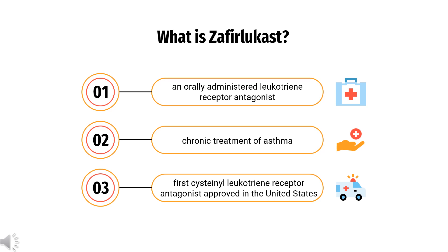Zafirlukast is an orally administered leukotriene receptor antagonist used for the chronic treatment of asthma. While Zafirlukast is generally well-tolerated, headache and stomach upset often occur. Some rare side effects can occur which can be life-threatening, such as liver failure.